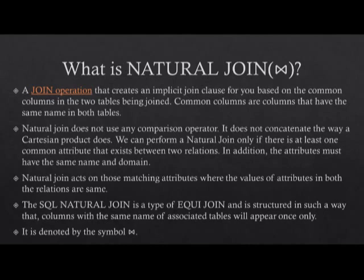You are only able to do a natural join if you have a column on table 1 that has the same exact name as a column on table 2, and they must also have the same data type. So if it's an integer on table 1, then it must also be an integer on table 2. Natural join acts on those matching attributes where the values of attributes in both relations are the same. The SQL natural join is a type of equi-join.